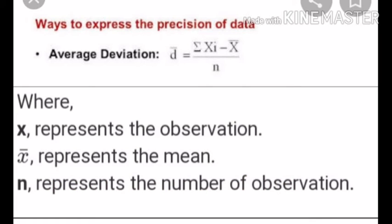In the average deviation formula, xi represents each individual observation, x̄ represents the mean of all observations, and n represents the total number of observations.